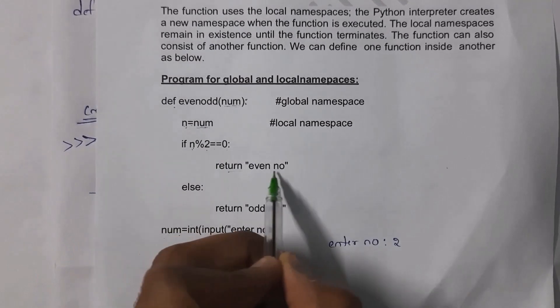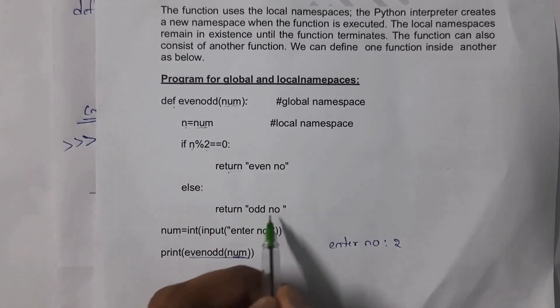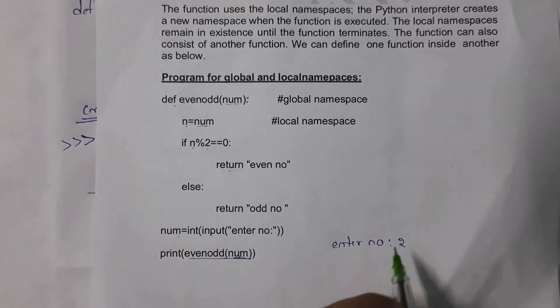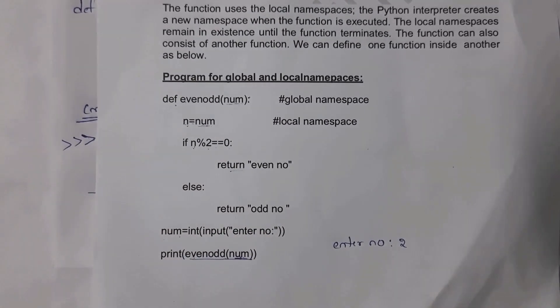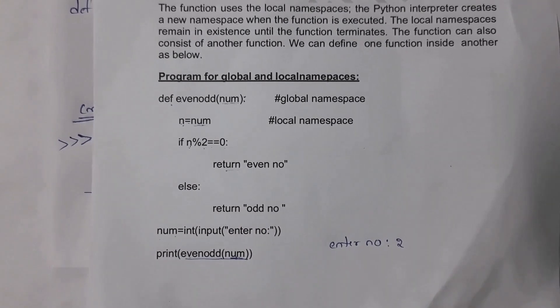If we divide any number by 2 and get a remainder of zero, we return 'even number'; otherwise we return 'odd number'. Since I entered 2, and 2 divided by 2 gives remainder zero, the output is 'even number'. This completes the program demonstrating global and local namespaces.